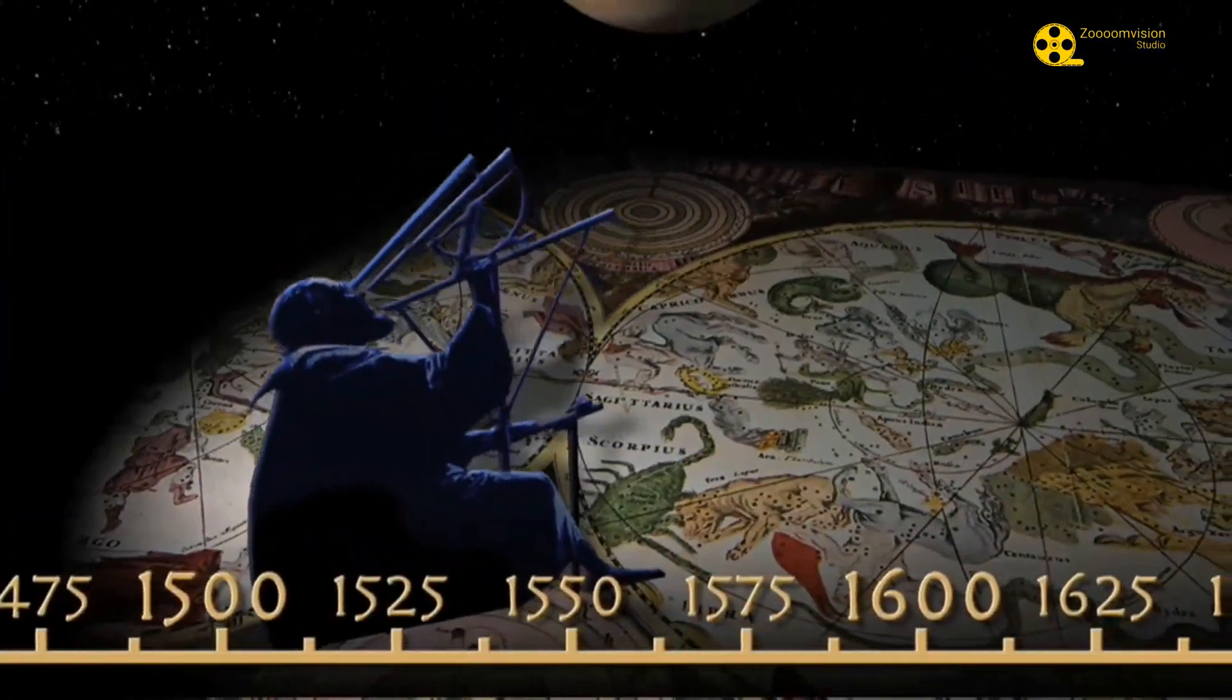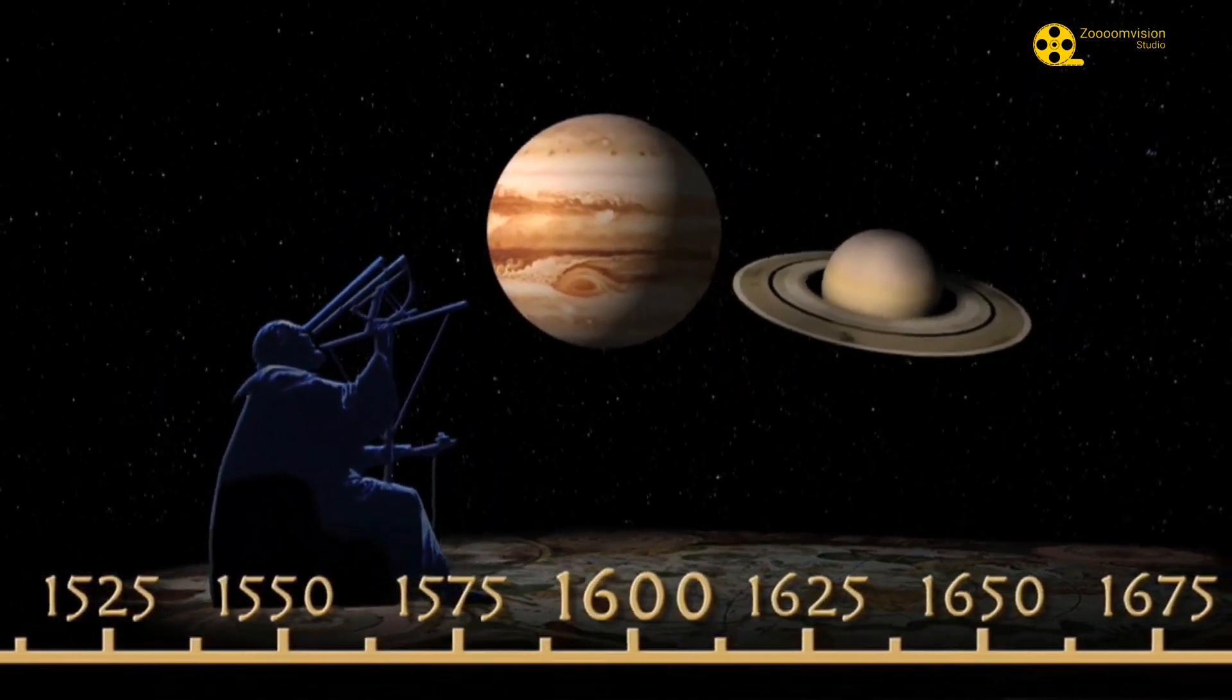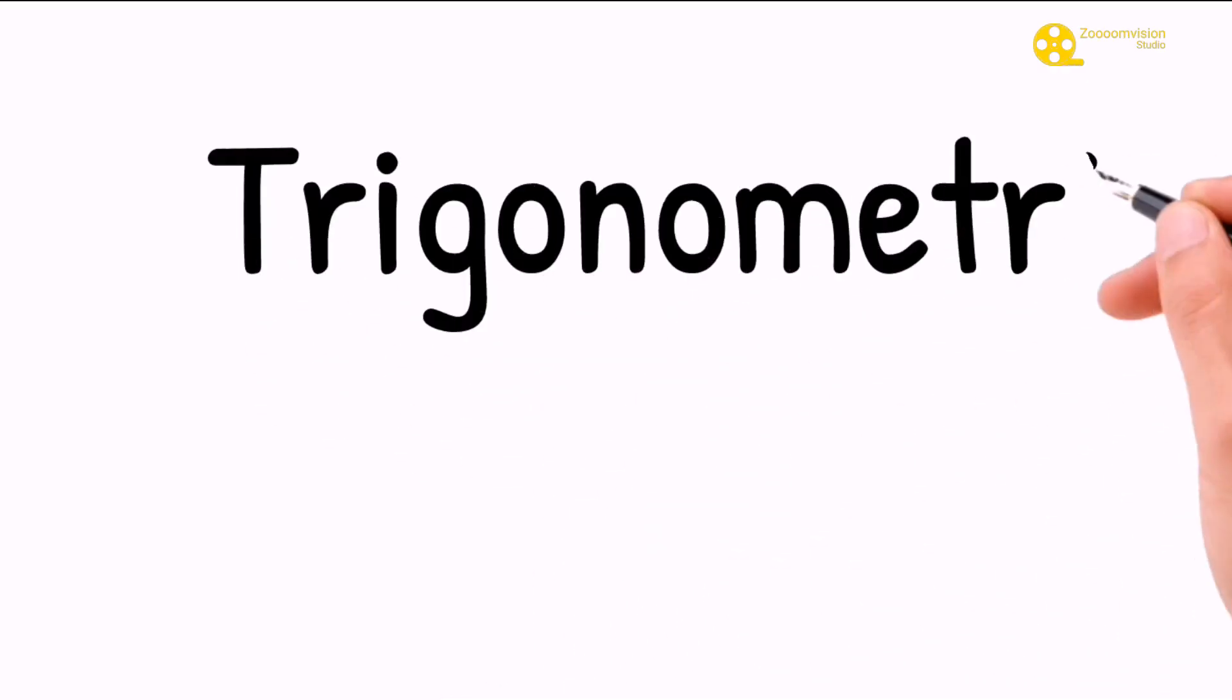An important question is how do we measure the distance of stars and other galactic objects so far away? The first method is called the trigonometric parallax.